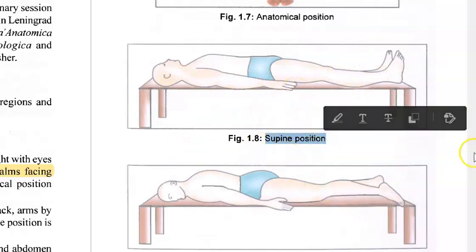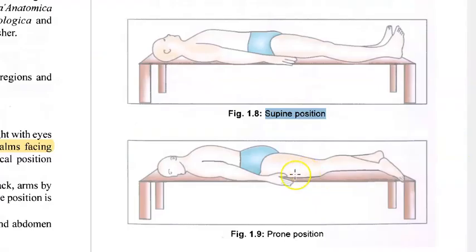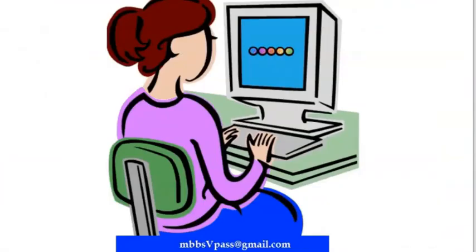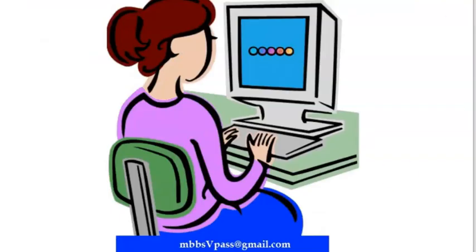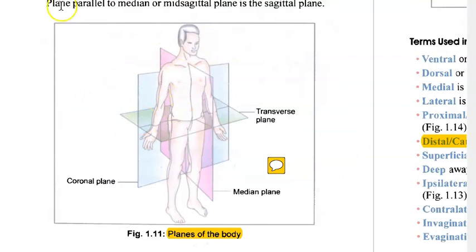The supine position is simply lying on your back. If you are lying on your belly, that is the prone position. The lithotomy position is used in obstetrics and gynecology.